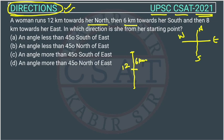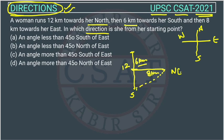And then, 8 km towards her east. So now going towards east — 8 km. The question asks: in which direction is she from her starting point? This is the starting point, and this will be the distance. The direction will be northeast direction. From the starting point, she is in the northeast direction.